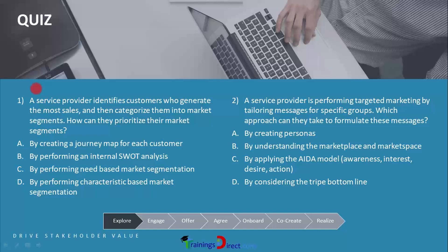Let's take a quiz on the Explore step. Number one: a service provider identifies customers who generate the most sales and then categorizes them into market segments. How can they prioritize their market segments? By creating a journey map for each customer, by performing an internal SWOT analysis, by performing needs-based market segmentation, or by performing characteristics-based market segmentation.